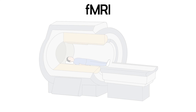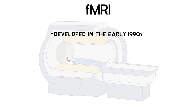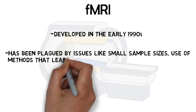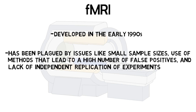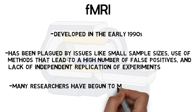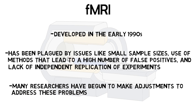fMRI was developed in the early 1990s, and since has become a very popular neuroimaging method. Nevertheless, in its short history, fMRI research has been plagued by issues like small sample sizes, the use of methods that lead to a high number of false positives, and a small proportion of study results that have been independently reproduced. As the field has become more aware of these problems, many researchers have begun to adjust their approach to address them.